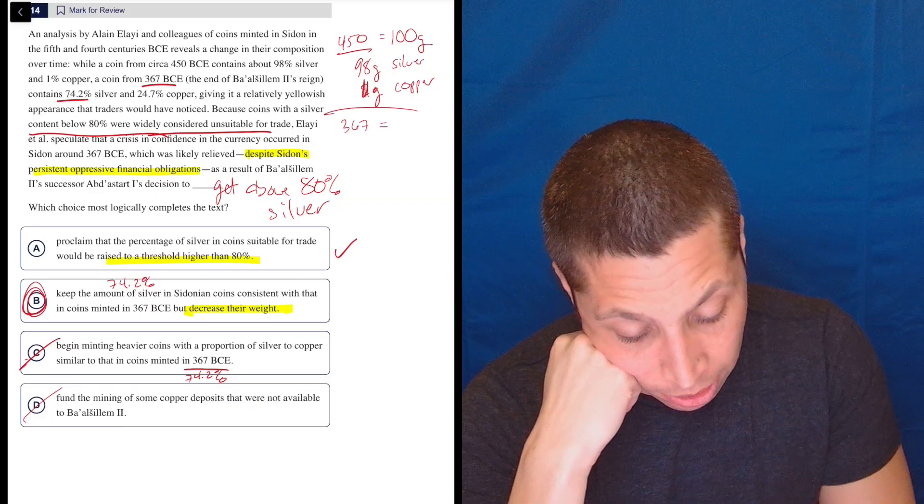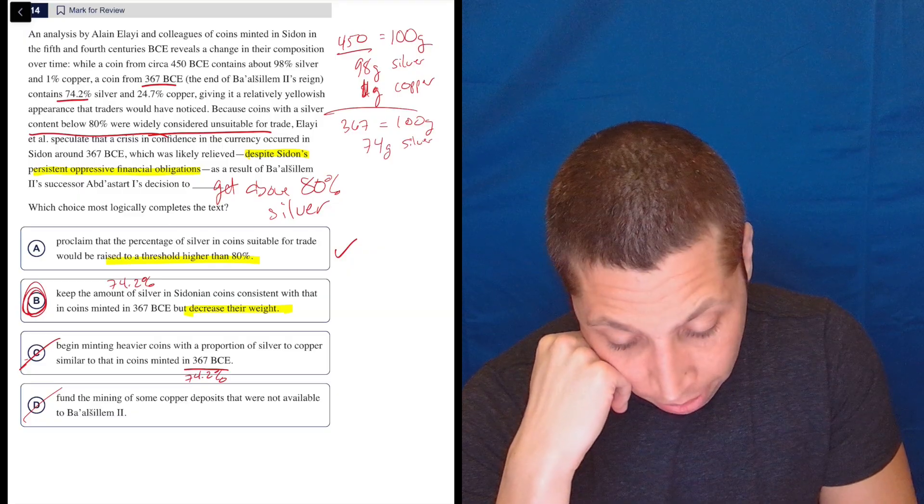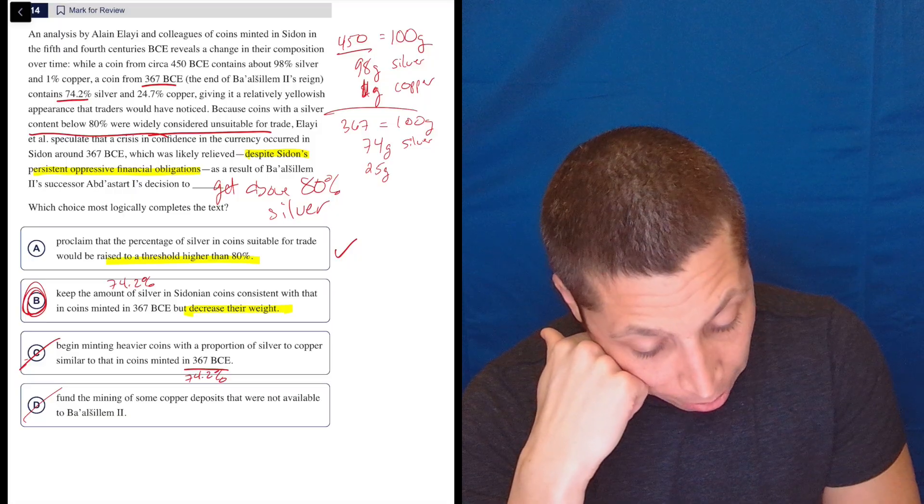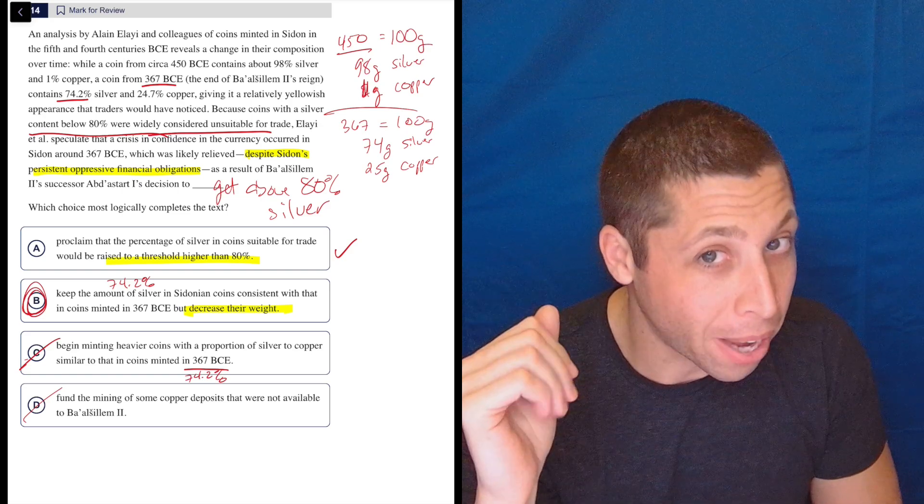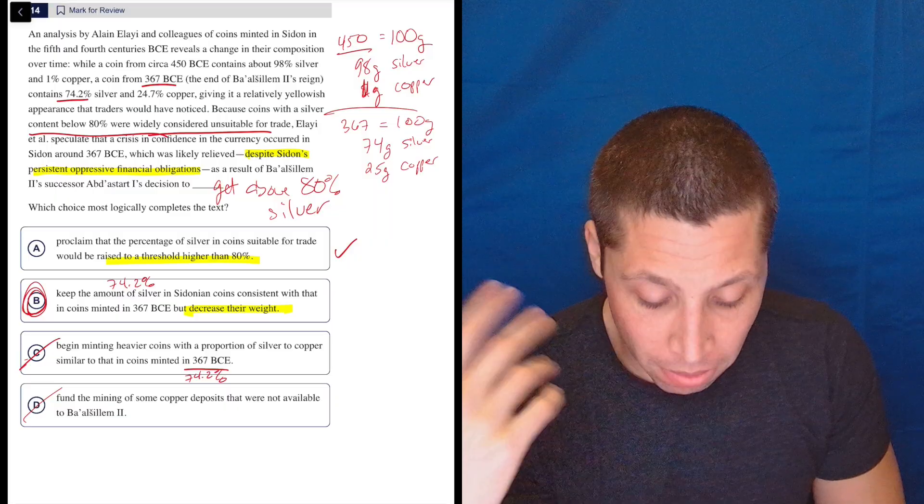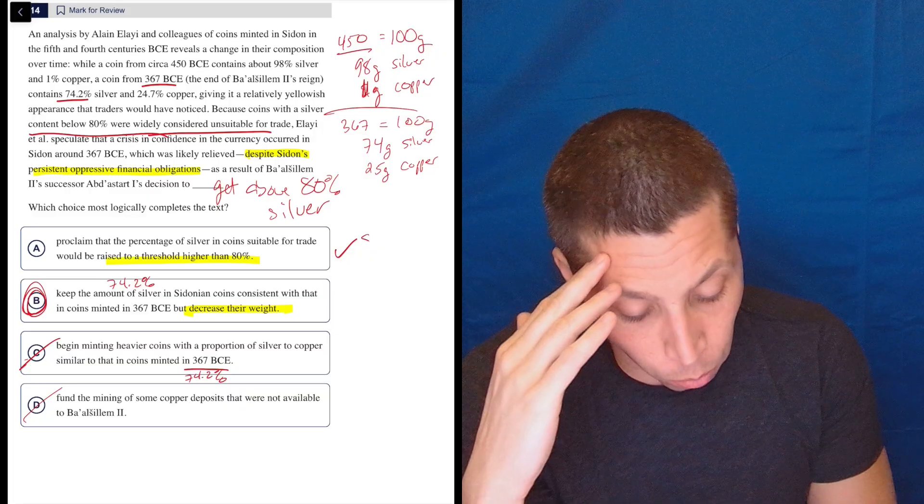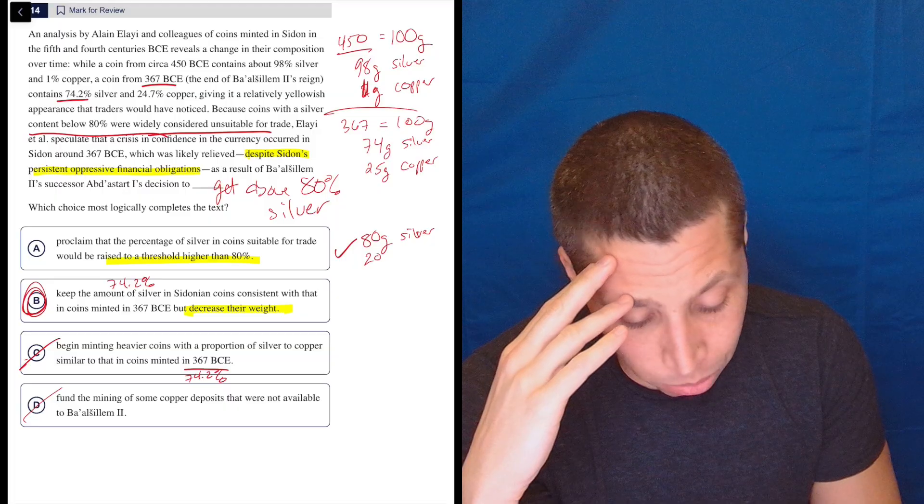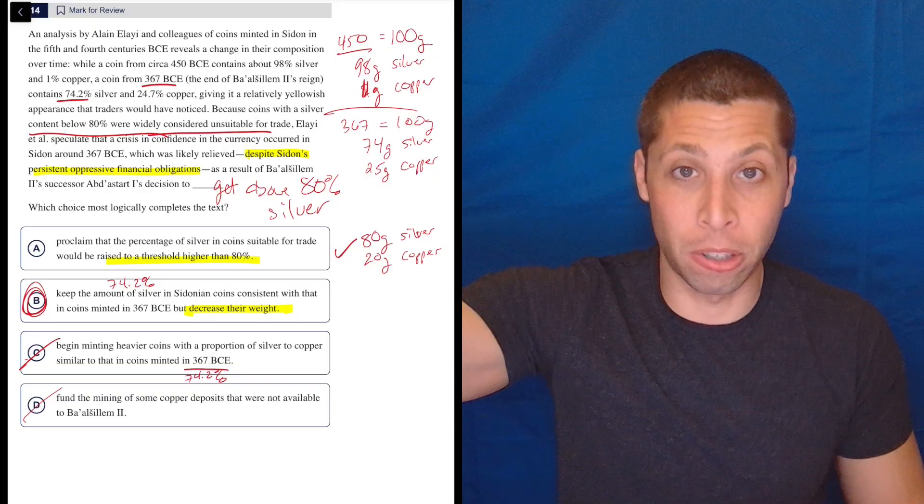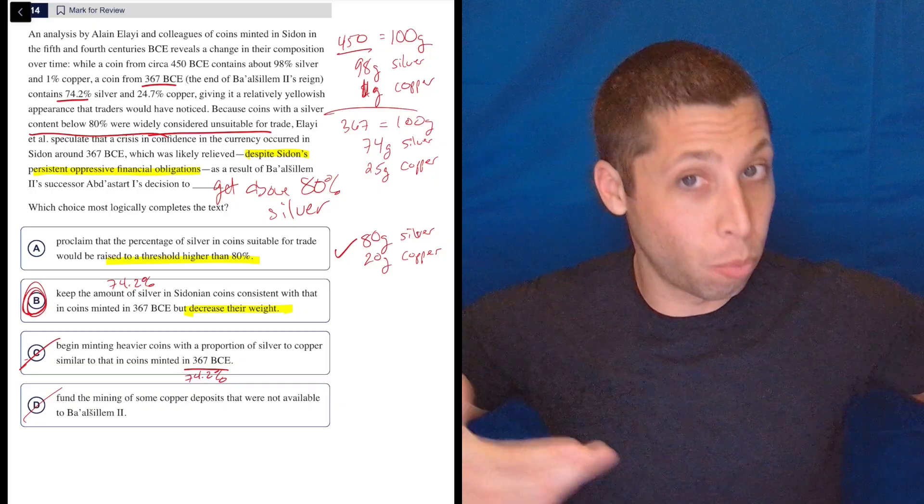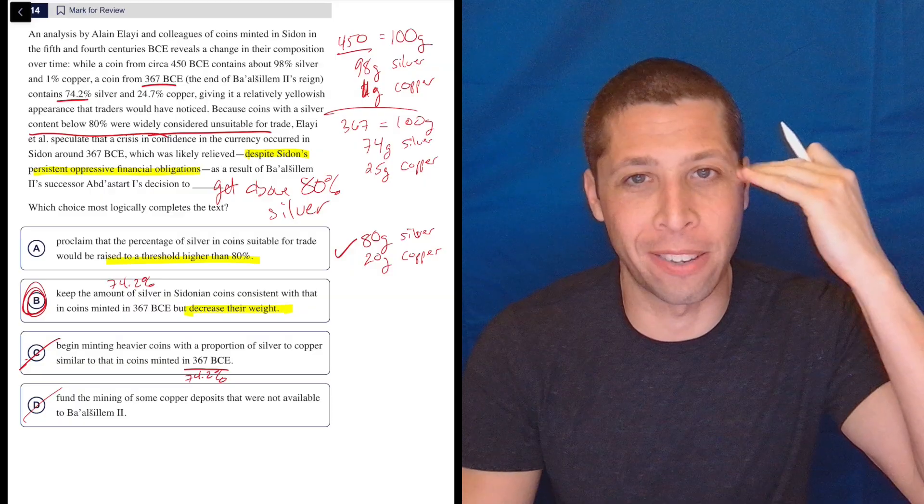Then 367 rolls around and it's still a hundred grams. That coin weighs the same, but now it's 74 grams of silver and 25 grams of copper. Again, there's still something else in there. Who knows what it is? But you get the point. There's less silver, still looks the same, same kind of coin, but the weight's off. So A, proclaim that the percentage of silver in coins suitable for trade would be raised to a threshold higher than 80%. That's just saying, why don't we go back to where we were? Why don't we go to 80 grams of silver and 19 grams of copper? Like let's add back in more silver, but that's wrong because where are we going to get the silver from? We're broke. We have no money. We can't do it.